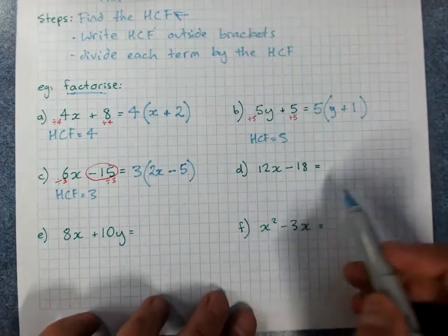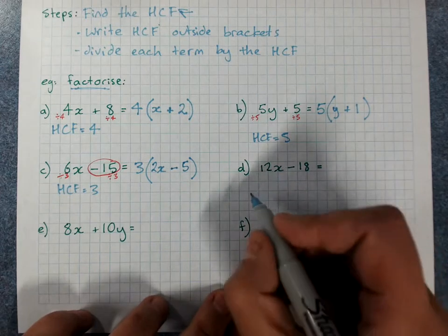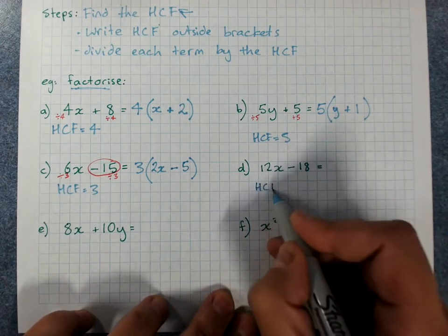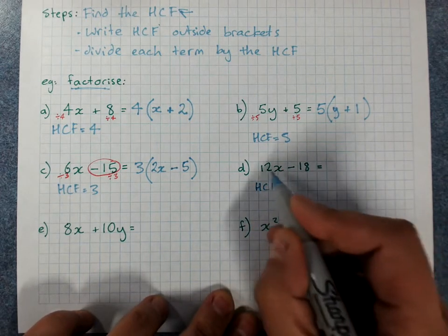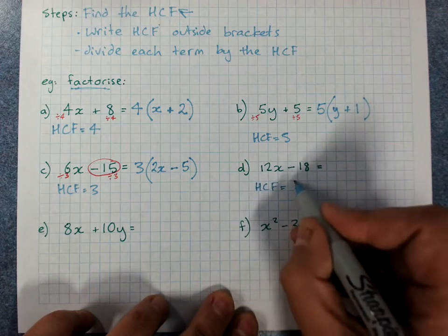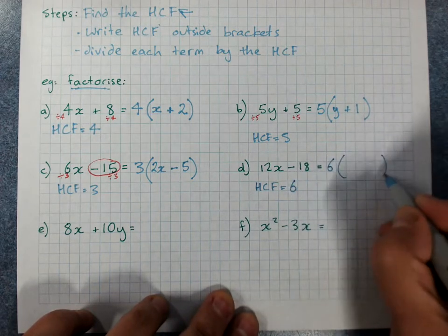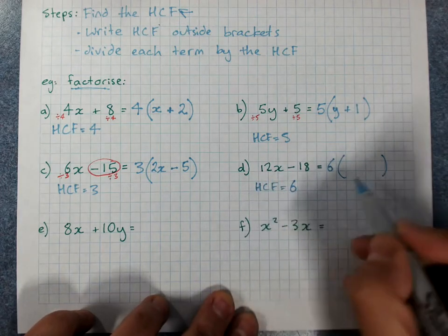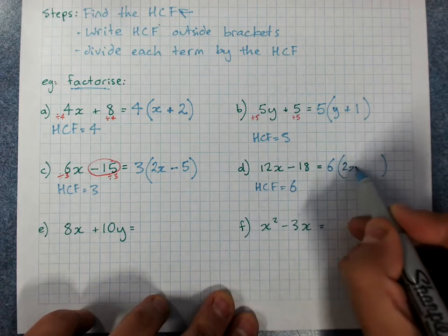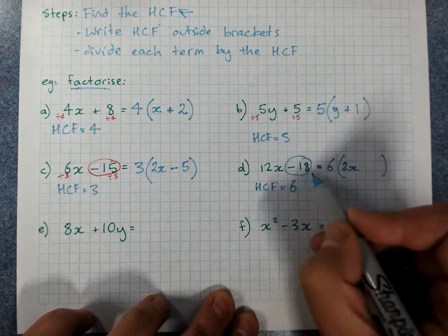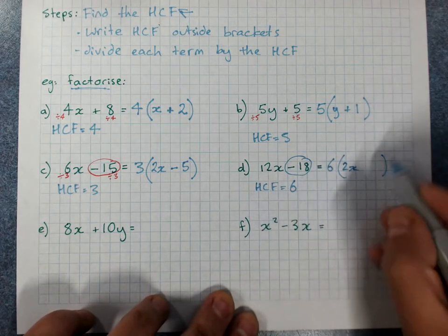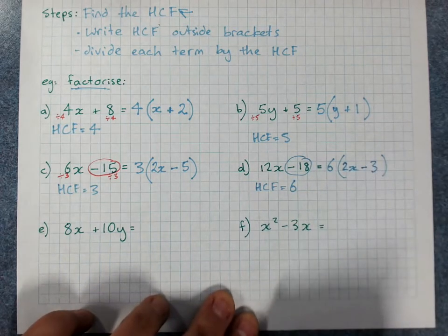12x minus 18. HCF. Does 12 go into 18? No. Does 6 go into 18? Yes. HCF is 6 outside the brackets. 12x divided by 6 is 2x. Negative 18 divided by 6 is negative 3. You're done.